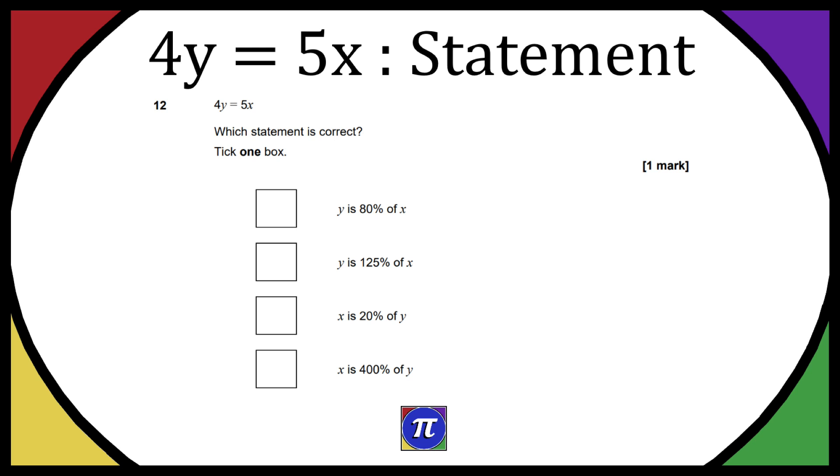So let's just rearrange to isolate y and then we can do the same for x and we're going to see which option is correct. So when we have 4y is equal to 5x, we can divide both sides by 4 to get y by itself and it gives us y is equal to 5 over 4x.